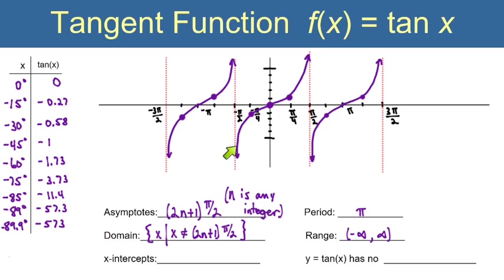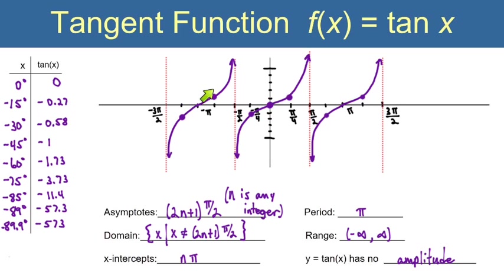The x-intercepts occur at −π, 0, +π — that is, at nπ for any integer n. The y = tan(x) graph has no amplitude, because amplitude implies minimum and maximum values like those on sine and cosine. Tangent doesn't have that same oscillating behavior, so there's no amplitude. Notice the pattern: tangent is high on the right side and low on the left.